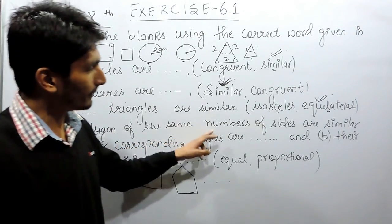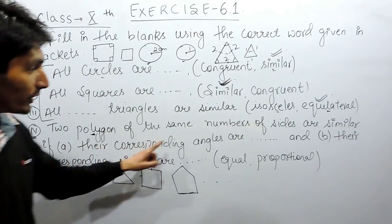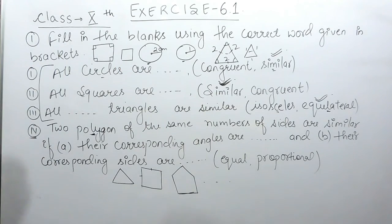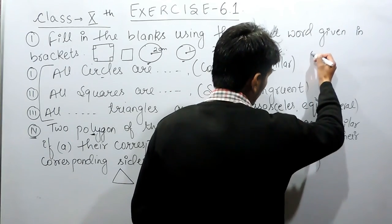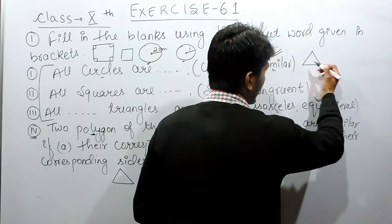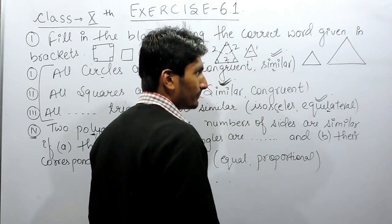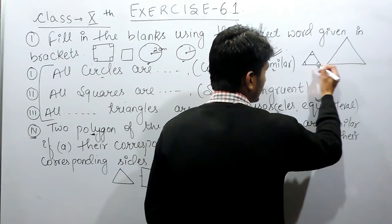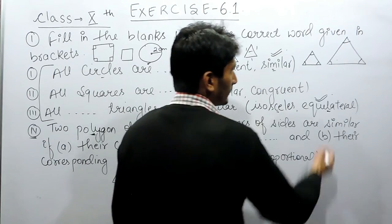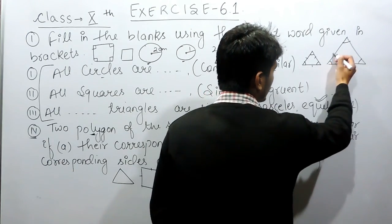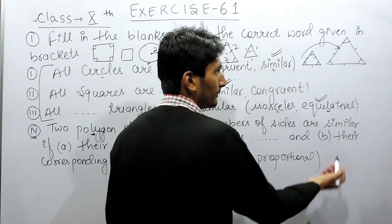So we need to find: two polygons of the same number of sides are similar when their corresponding angles are what? When we talk about similar figures — for example, if this triangle and this triangle are similar — the angles of this triangle must be equal to the corresponding angles of the other triangle, and the sides must be proportional to the corresponding sides of the bigger triangle.